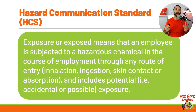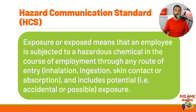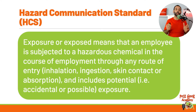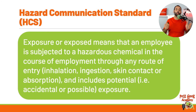Routes of entry include inhalation, ingestion, skin contact, or absorption, and includes potential, accidental, or possible exposure. Exposure means if you handle a pesticide, if you're around a pesticide, if you transport or store a pesticide. Exposure doesn't mean you are intoxicated or that there is toxicity — it means you were around it and have the possibility of being exposed.